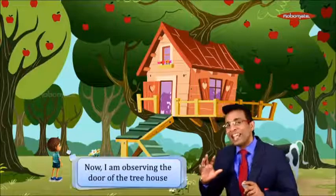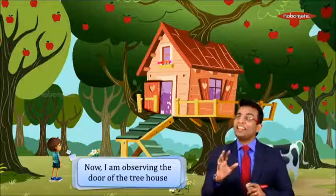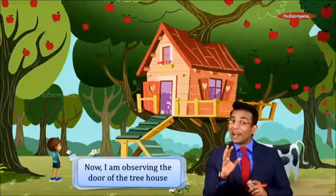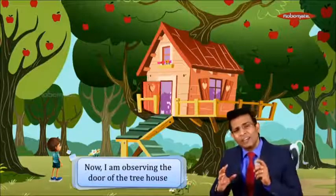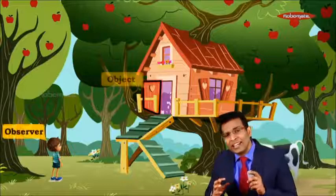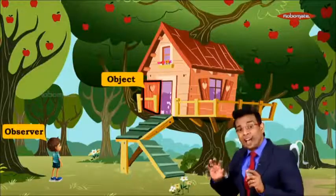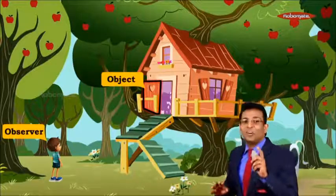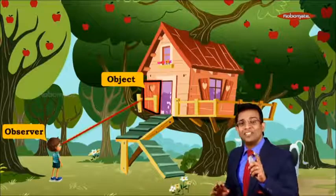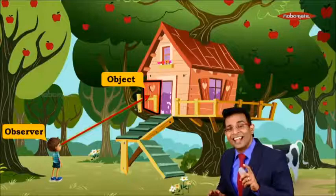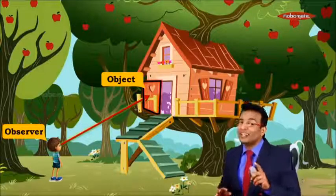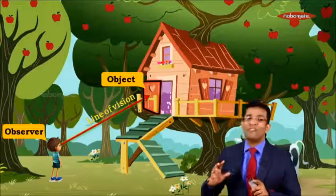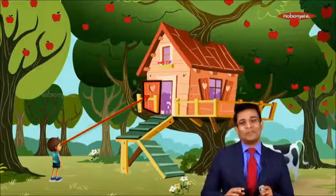Now Raj is observing something more — this time he's seeing the door of a tree house. Raj is the observer and that door is the object. The straight line connecting his eye to that object is again the line of vision.